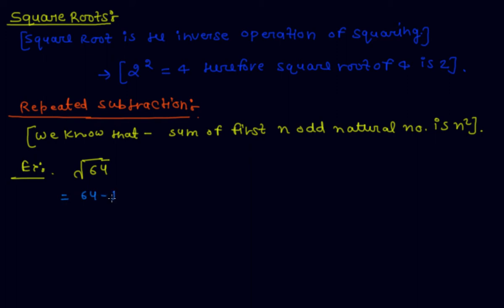64 minus 1 which is equal to 63. 63 minus 3 equal to 60. 60 minus 5 is 55. 55 minus 7 is 48.